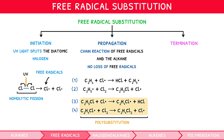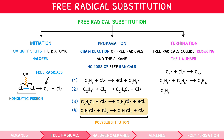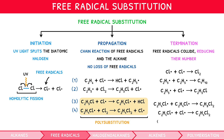Termination is a series of reactions in which the free radicals collide with one another, thus involving a decrease in the number of free radicals. The possible reactions within termination are simply the combinations of radicals produced during propagation. In our example, we would have the following three reactions. However, if polysubstitution occurred, we would have an additional three reactions.